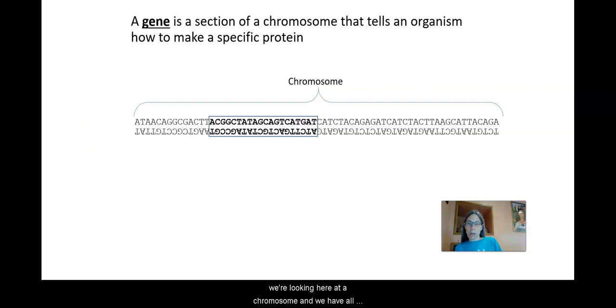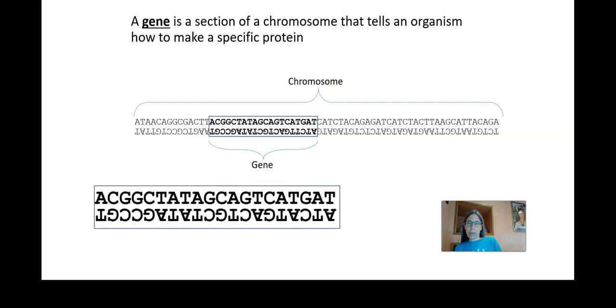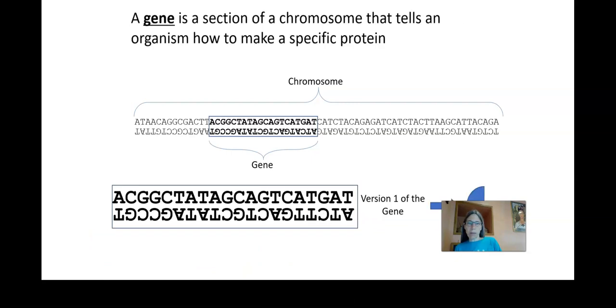Okay. So let's take a look here at the relationship between chromosomes and genes. So we're looking here at a chromosome and we have all the individual nucleotides lined up here. And this specific region is a gene. And we can take a close look at that particular gene. And so we see a gene is really not a scary thing. It's just a sequence of nucleotides that are the directions for making a particular protein.